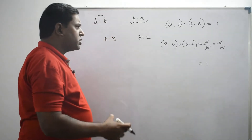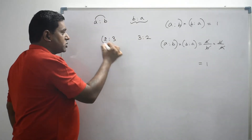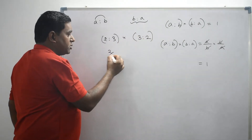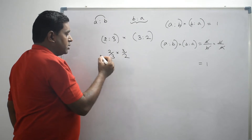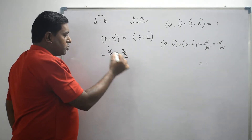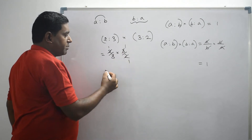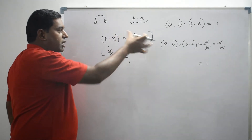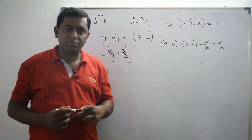We can do the same verification for 2 is to 3 and 3 is to 2. Let's multiply: 2 by 3 into 3 by 2. This 2 and 2 can be cancelled, and 3 and 3 can be cancelled. We get 1. So 2 is to 3 and 3 is to 2 are inverse to each other.